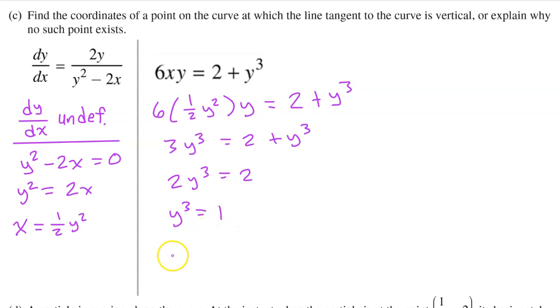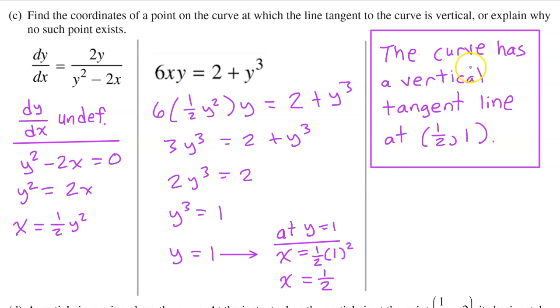Dividing both sides by 2 gives us y³ is equal to 1, and taking the cube root of both sides gives us y is equal to 1. To find the coordinates of x, we just need to substitute this back into this little equation right here, and we get x is equal to 1/2. It's probably better to show our work sort of in order, so let's show it like this. We conclude that the curve has a vertical tangent line at 1/2 comma 1.